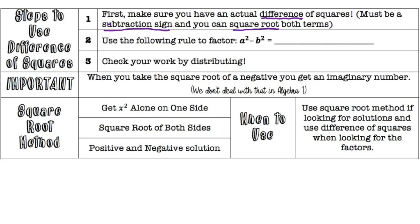Use the following rule to factor a squared minus b squared. What you do is set up two parentheses — because they're both perfect squares you can take the square root of both of them, and there's a subtraction sign in between. All we're going to do is put a plus sign and a minus sign in each of the parentheses, giving you (a + b)(a - b).